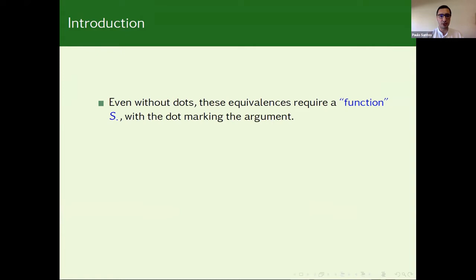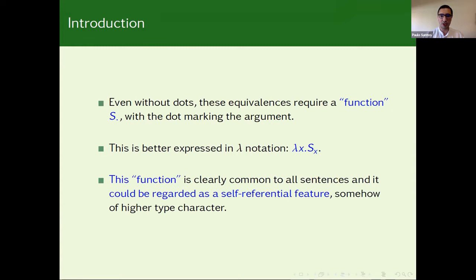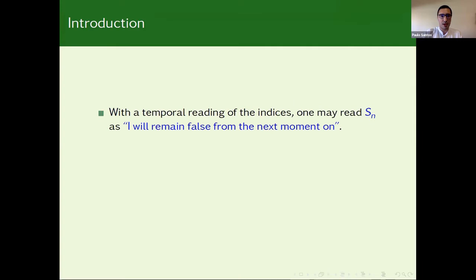And even without the dots, these equivalences require some kind of a metafunction, S of something, where this dot is marking each argument. So in a sense, one could attribute the self-referential nature to this meta-entity that I'm calling some kind of a function, S of something. Or, even better expressed in lambda notation, lambda X, S(X). This higher-type function is common to all sentences. And as I've mentioned, it could be regarded as some kind of a self-referential feature of higher-type character.